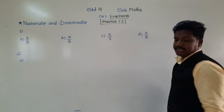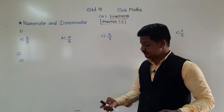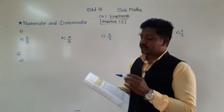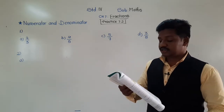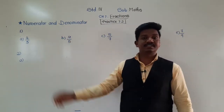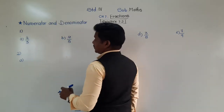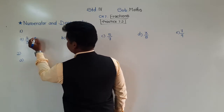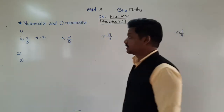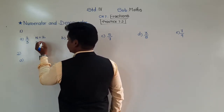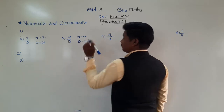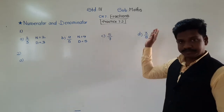Now let us solve Practice 7.2. Question 1: write the numerator and denominator for each of the following fractions. For 2 by 3 — the number above the bar is the numerator, so numerator N equals 2, and denominator equals 3. For 4 upon 5 — numerator is 4 and denominator is 5. In this way, write all the answers.